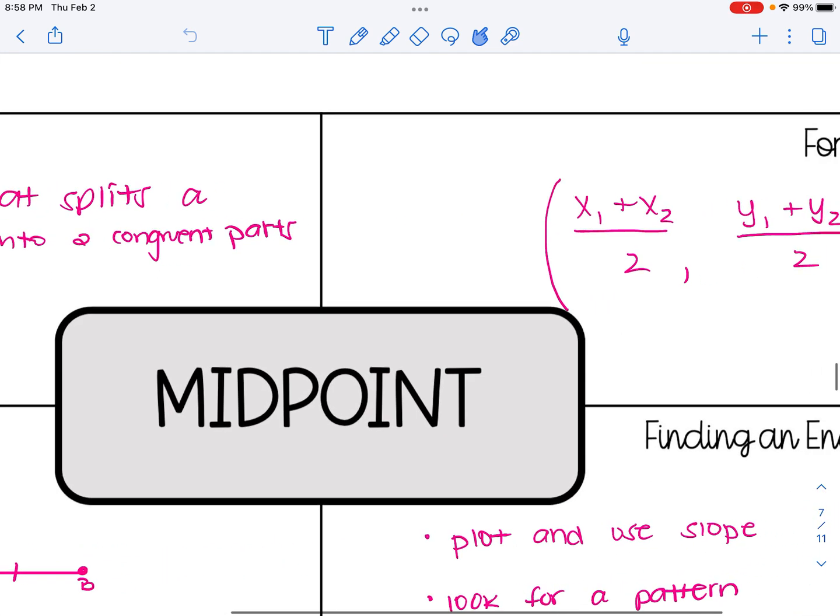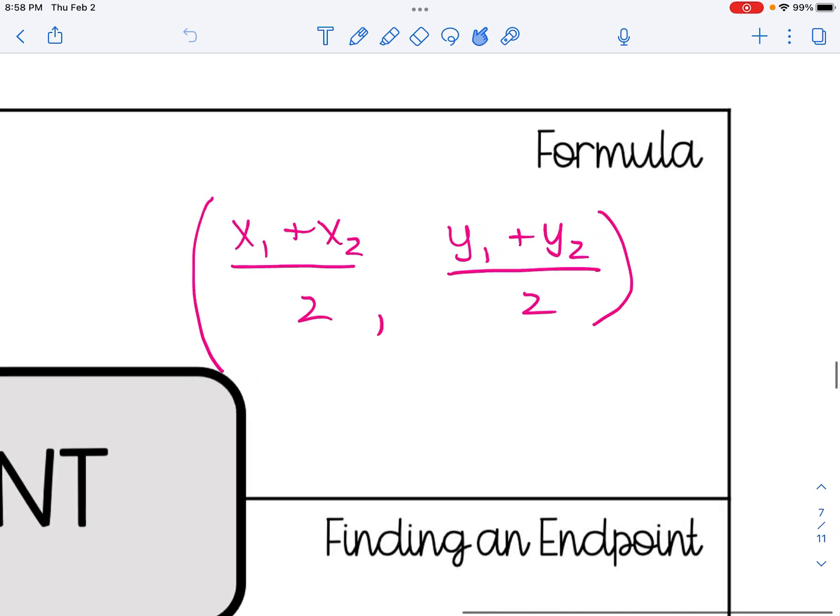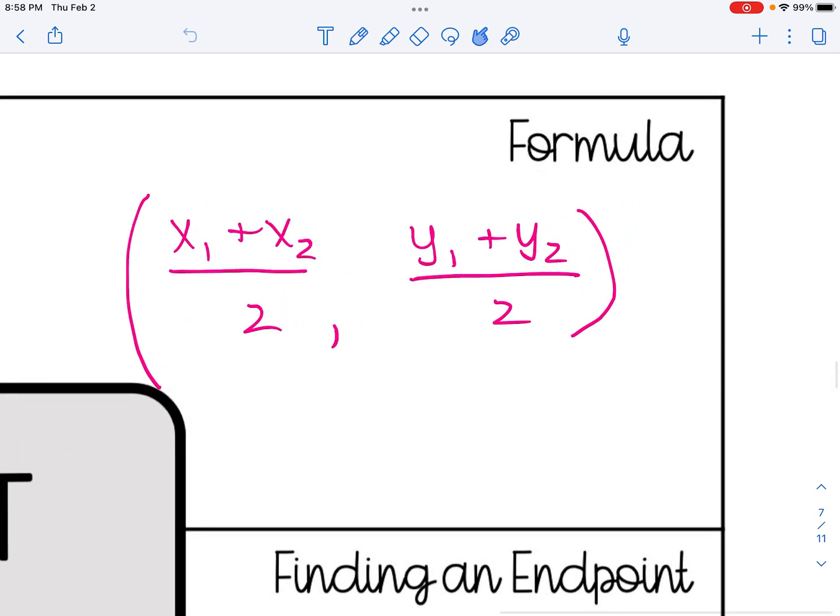When we're working with coordinates, we have a formula to help us find the coordinates, the x and y coordinate of the midpoint of a segment. And that's this formula: x1 plus x2 over 2 and y1 plus y2 over 2. What we're basically doing is we are finding the average of the x values and we are finding the average of the y values.